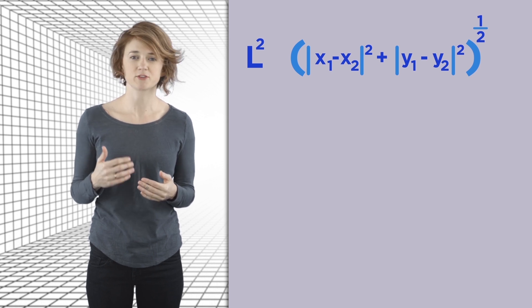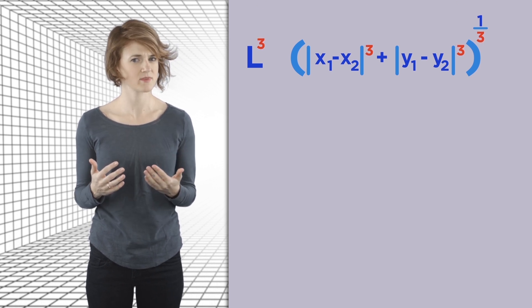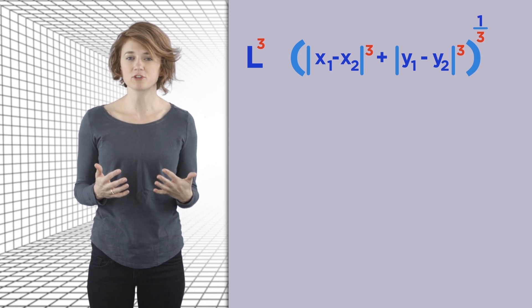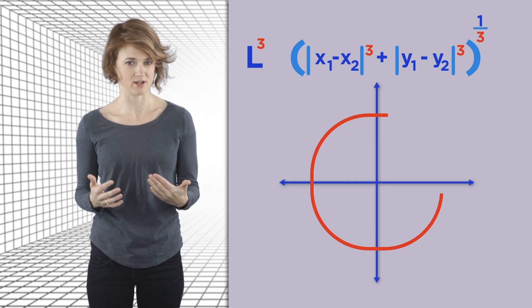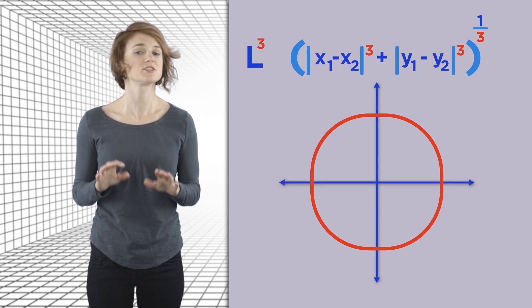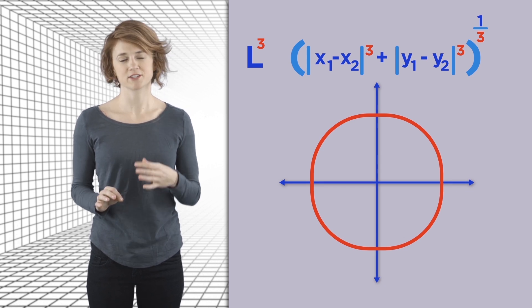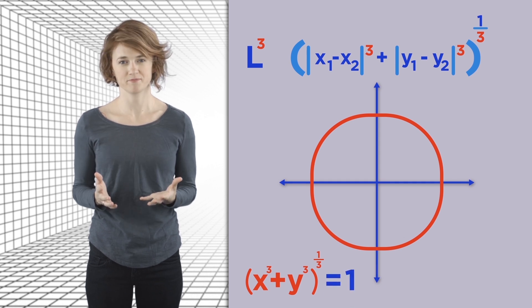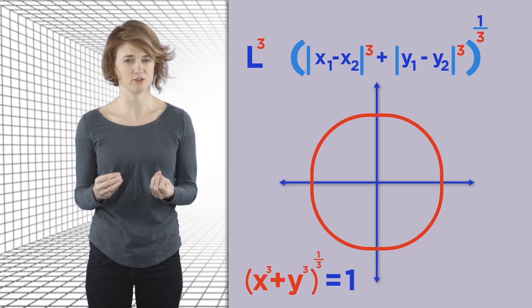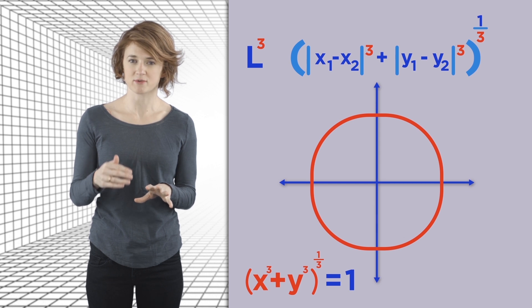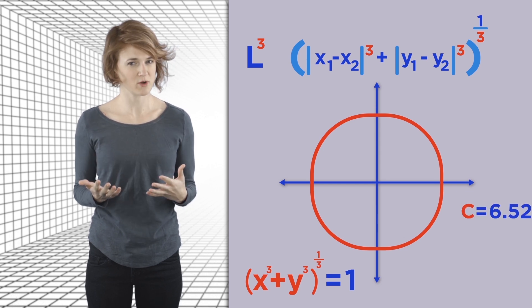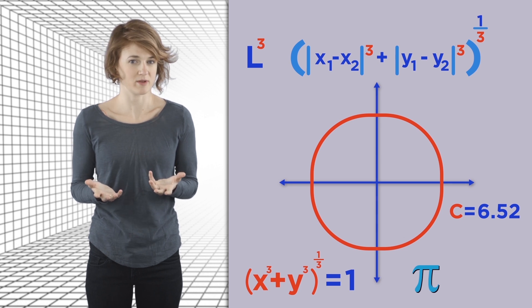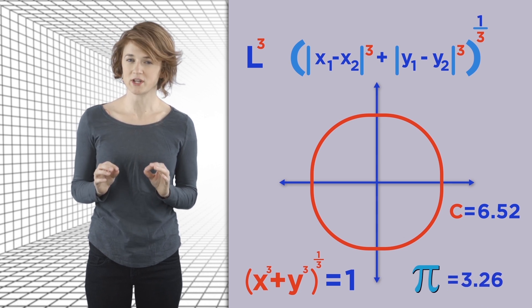What happens if we replace all the twos by threes? Well, we get the L3 metric. What does a circle look like under the L3 metric? This. It's all the points (x,y) such that (|x|³ + |y|³)^(1/3) is equal to 1. The circumference of this circle, measured using the L3 metric, is roughly 6.52, which makes the value of pi under the L3 metric roughly 3.26.